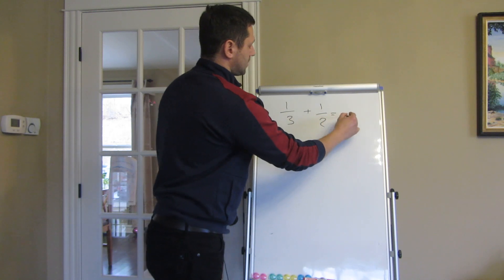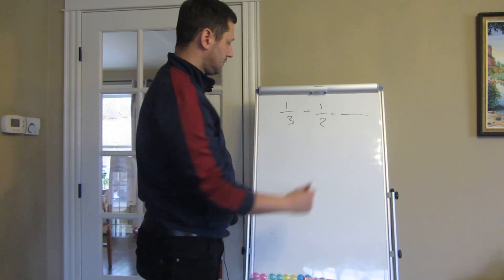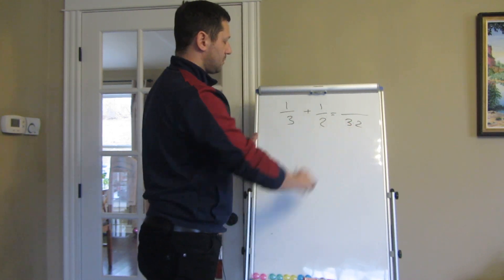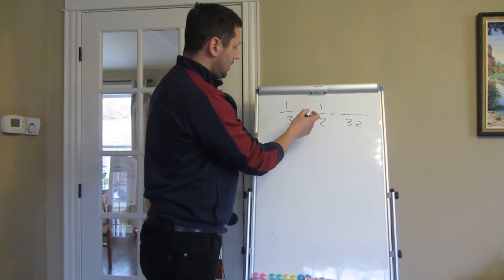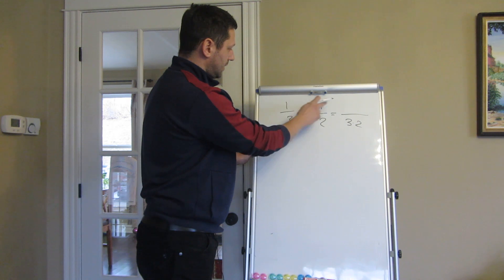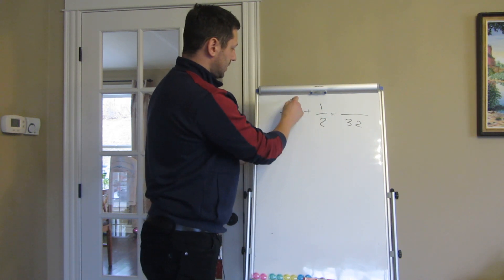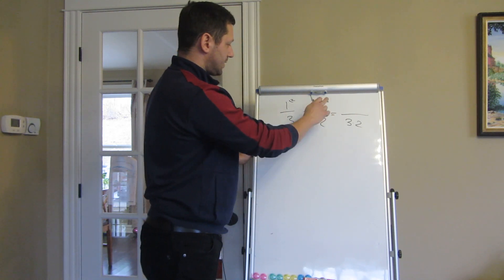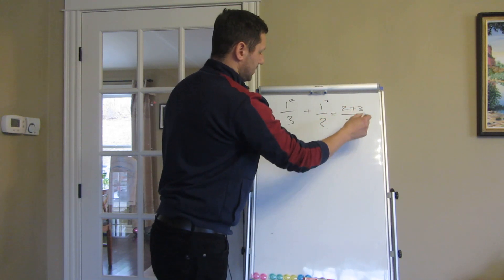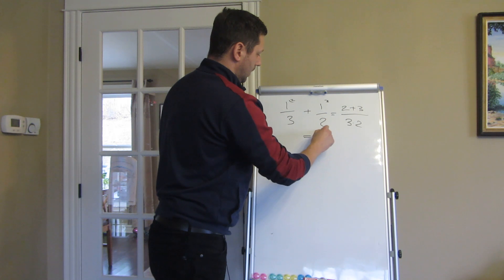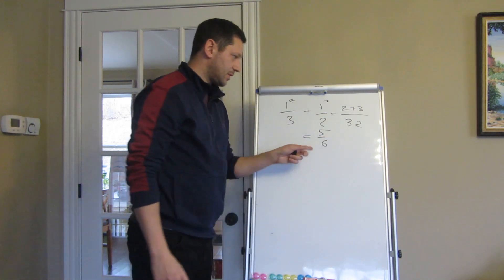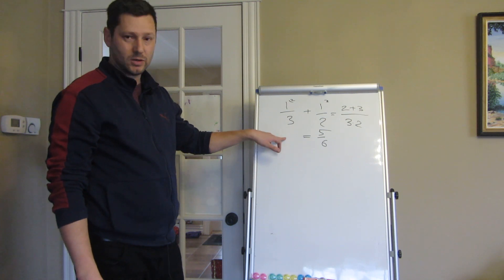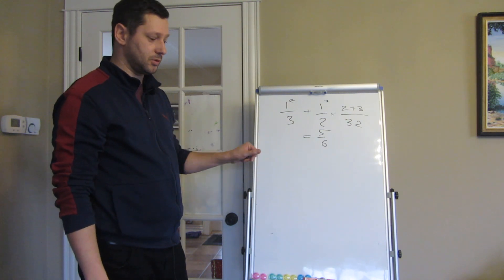So the algorithm says let's multiply two numbers in the denominator, which is three multiplied by two, and then multiply each side by the opposite number. So in this case it will be multiplied by two and multiplied by three and then summing. So it will be two plus three, which equals five sixths. So it's the proper answer, but the issue is that you can carry this out mechanically without understanding what's going on.